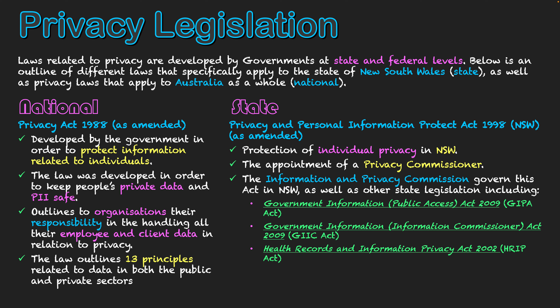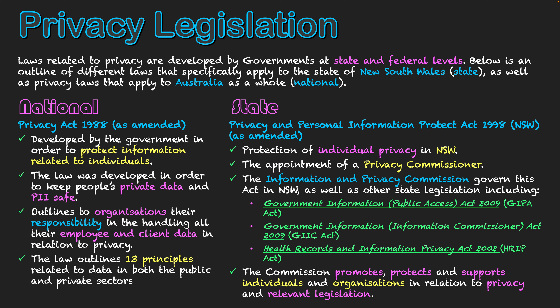So if you're unsure about a privacy breach, or if a privacy breach does take place and it's known publicly, it'll be this commission that acts on it. They're also the commission you should contact for support. In many cases, if there has been a privacy breach from cybercrime, a business would want to contact the Information and Privacy Commission first in order to find support and start the process of managing the incident. The commission promotes, protects, and supports individual organizations in relation to privacy and the relevant legislation shown on screen, and they would also refer to the legislation at the national level as well.